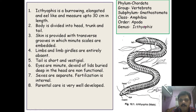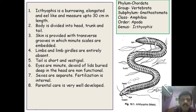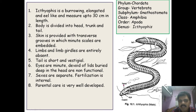Ichthyophis has a tail, a trunk, and a head — the body is divided into head, trunk, and tail region. It is limbless and the eyes are hidden; therefore it is also called a caecilian or blind worm. Ichthyophis is a burrowing animal, elongated and eel-like, measuring up to 30 cm in length. The skin has transverse grooves in which minute scales are hidden or embedded.